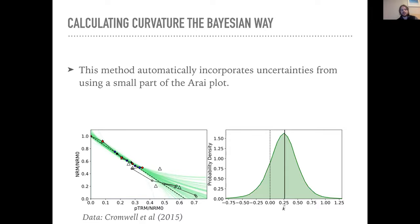Here's another example where you can take an interpretation that doesn't use the whole line. Because this specimen has thermochemical alteration — its pTRM check, a repeat measurement, fails — I say you can only take this part of the line; the other part isn't giving useful information. That causes uncertainty about what the curvature of the rest of the plot looks like, giving a much larger uncertainty in the curvature. This incorporates the uncertainty automatically — normally we use criteria requiring the line to be a certain length, but here that's handled by just fitting this way.